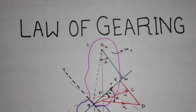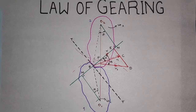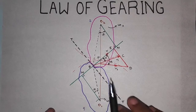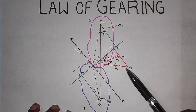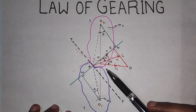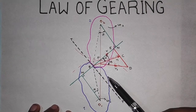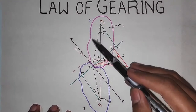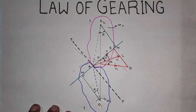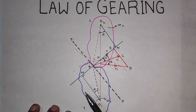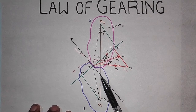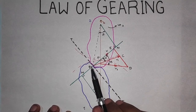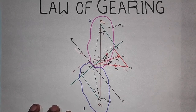So friends, let's begin with the video lecture. Consider the portions of two teeth — one on the pinion and other on the gear — which is shown in the figure. I have just taken a part of the gear tooth and the pinion tooth. Let the two teeth come in contact at point Q, and the wheels rotate in the direction shown in the figure.